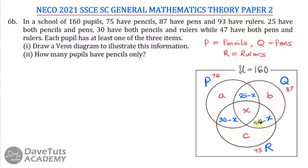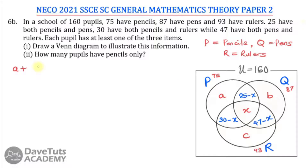Our fourth equation comes from the universal set. Since each pupil has at least one item, no pupil is outside the three subsets. If we add all entries and equate them to 160, that gives our fourth equation. For equation 1, the number of P: A plus 25 minus X plus X plus 30 minus X equals 75. The minus X and plus X cancel out, leaving A minus X plus 55 equals 75, so A minus X equals 20. This is equation 1.